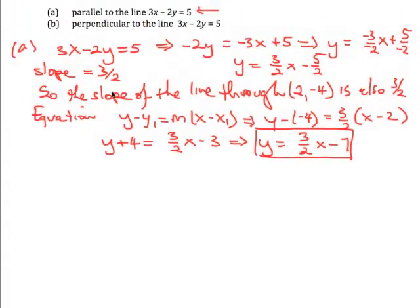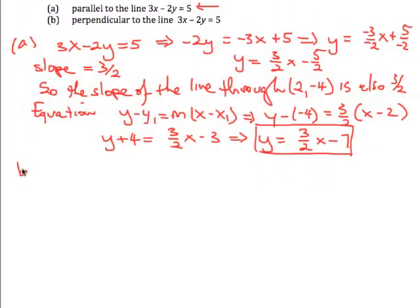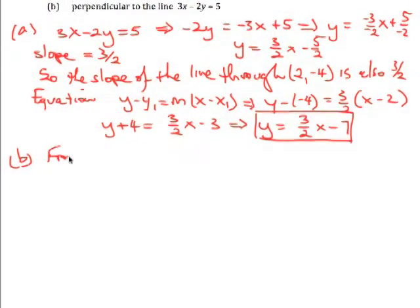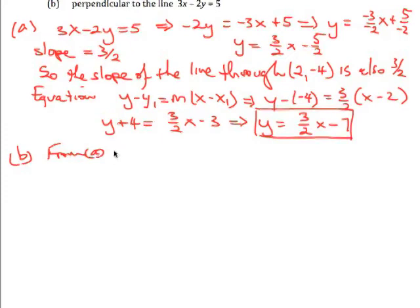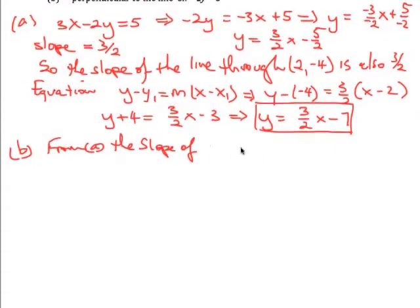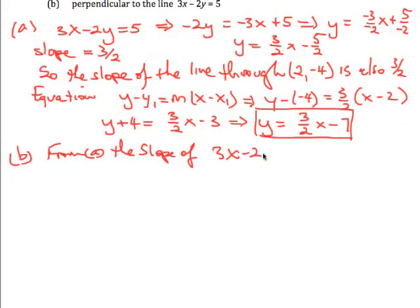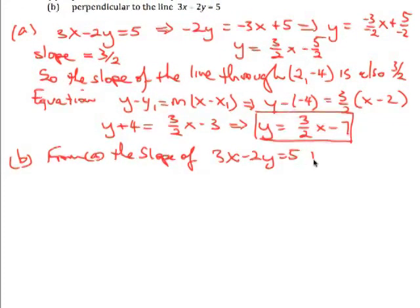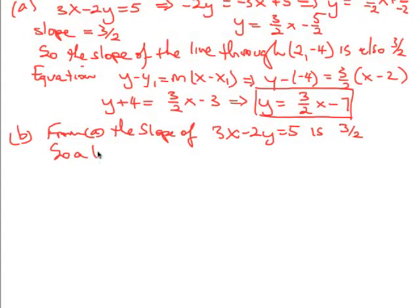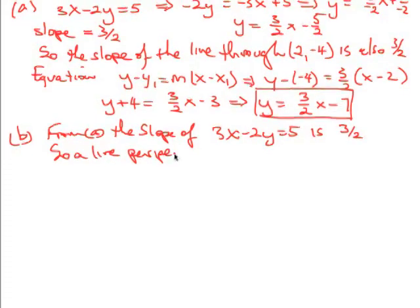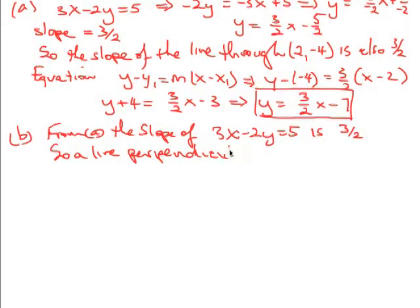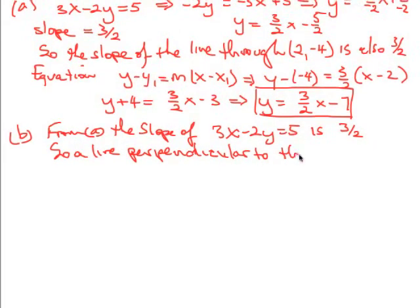So that's how we do that one, part a. Now part b. We also know from part a the slope of 3x minus 2y equals 5 is in fact 3/2.